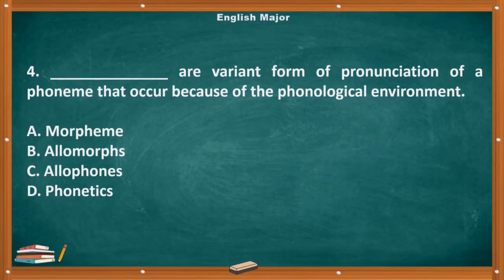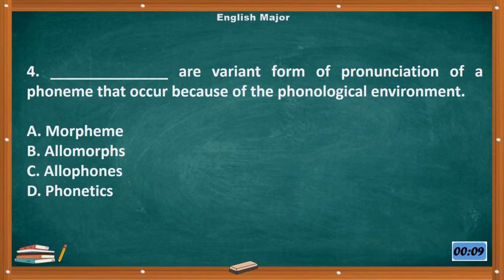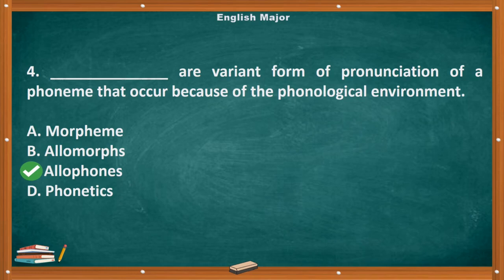Question number 4. Blank are variant forms of pronunciation of a phoneme that occur because of the phonological environment. A. Morpheme. B. Allomorphs. C. Allophones. D. Phonetics. The correct answer is letter C, Allophones.